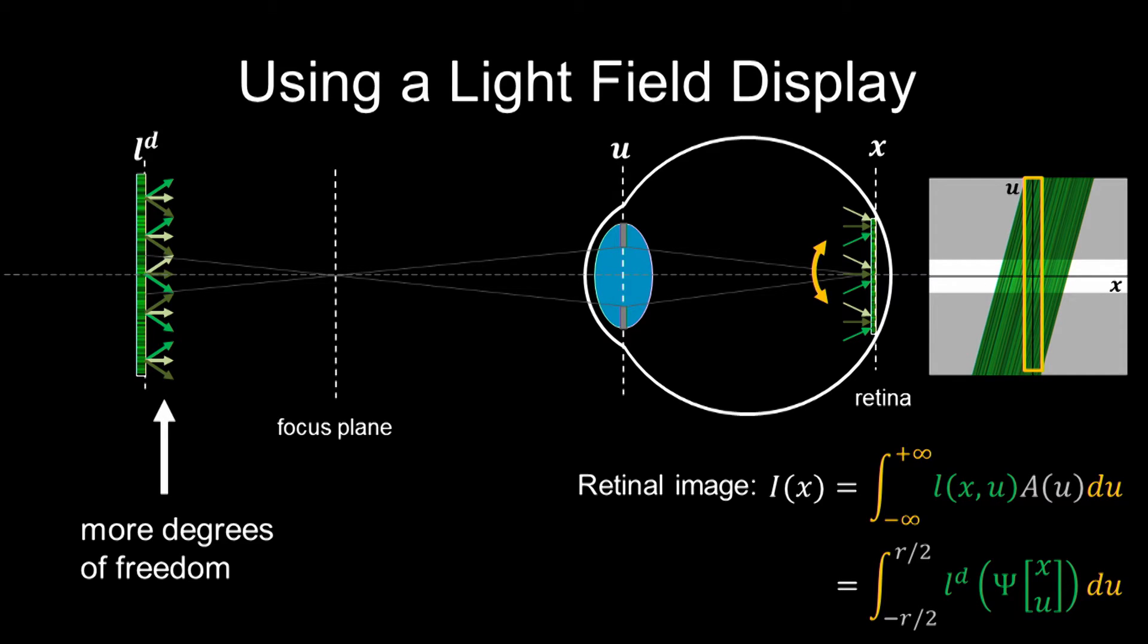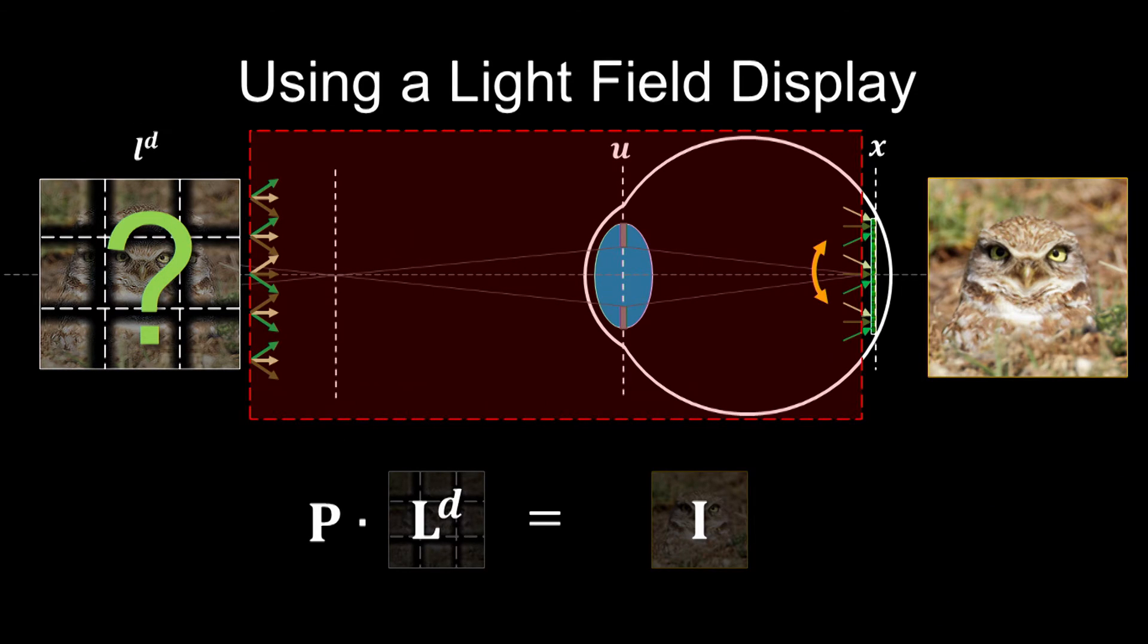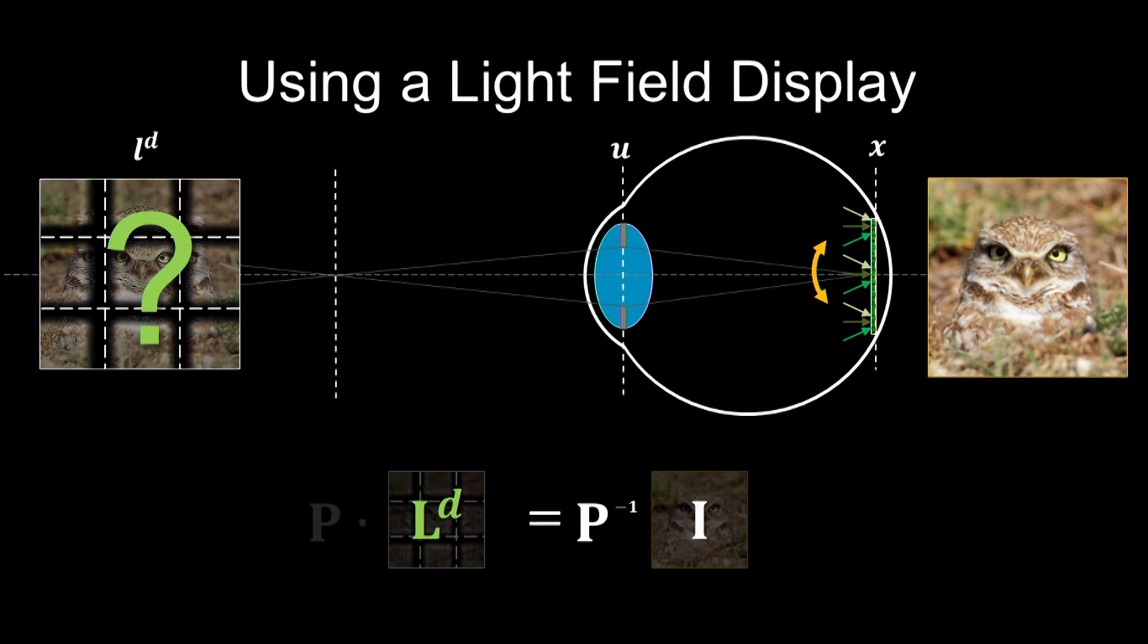The goal is to solve for the target display light field LD, such that after the projection or propagation process, which we modeled using a projection matrix P, will give you the target retinal image I, which should be sharp. Since we can formulate the system using linear equations, that is pretty straightforward to solve. We just move the projection matrix to the right-hand side and do an inverse. It sounds very simple, but actually, because this is a deconvolution problem, it is a little bit ill-posed.